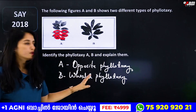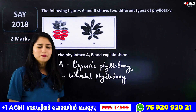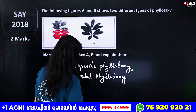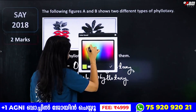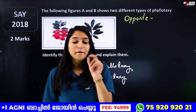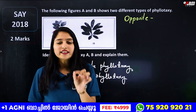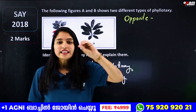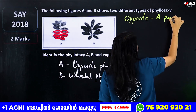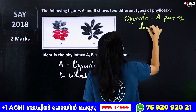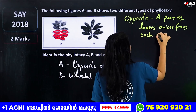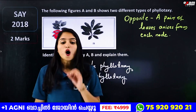Identify the phyllotaxy and explain the name. What is the opposite phyllotaxy? A pair of leaves arises from each node, or one node. This is the opposite phyllotaxy.